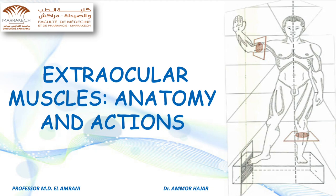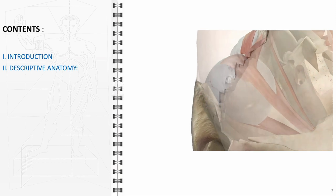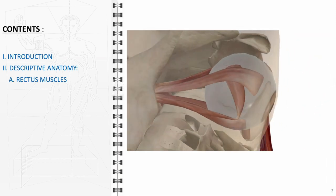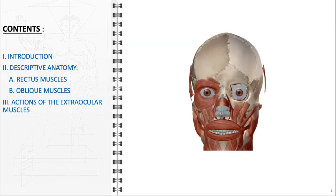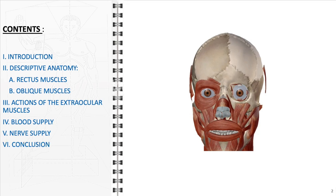In this video, we will explore the detailed anatomy of the extraocular muscles, focusing on their structure, functions, and the pivotal roles they play in eye movement and visual coordination. We will initiate with an introduction, then proceed to a comprehensive analysis of the rectus and oblique muscles of the eye, concentrating on their anatomy and functions. Before wrapping up, we will explore the details of their blood and nerve supply, emphasizing how these components are crucial for the effective functioning of the extraocular muscles.